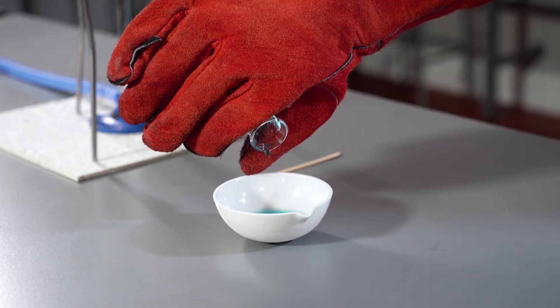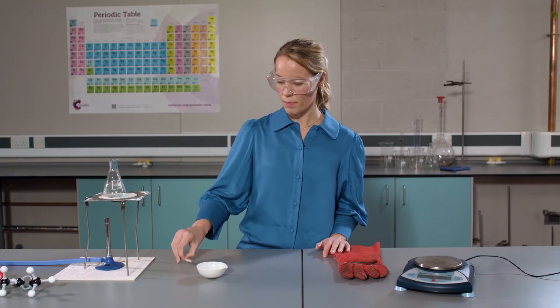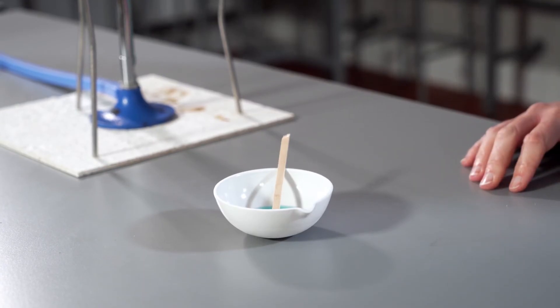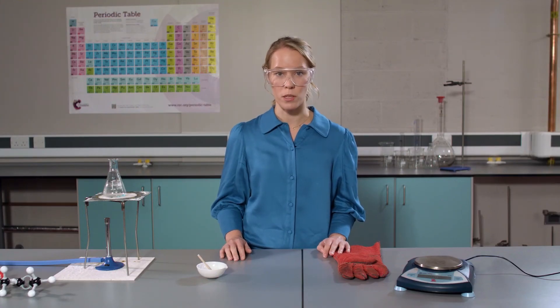If the crystals don't form quickly, we can use a wooden spill and place it inside the evaporating basin. This will speed up the reactions as it creates a rough surface for the crystals to form on.